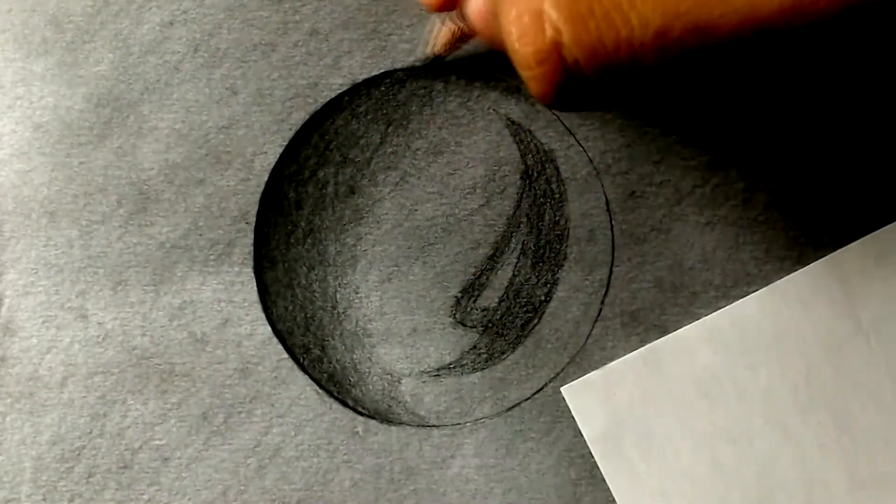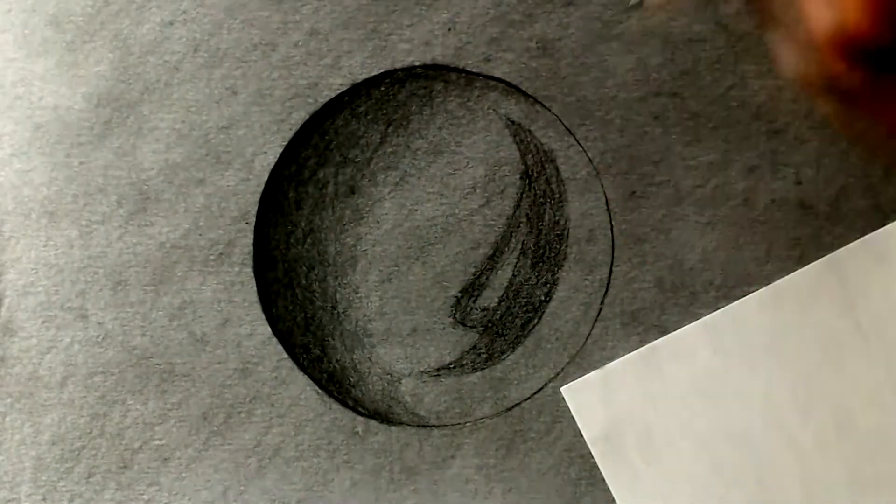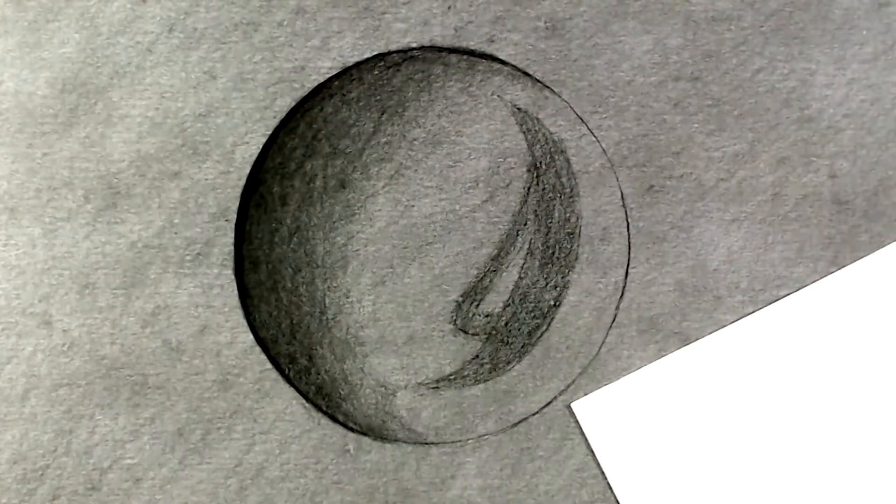Let's use the 4B pencil to darken even more that area. Next we use the blending stump again.